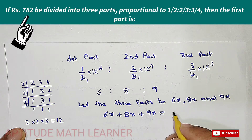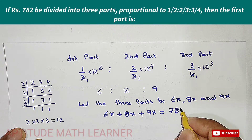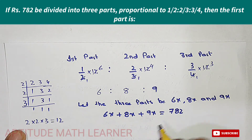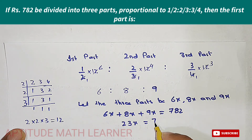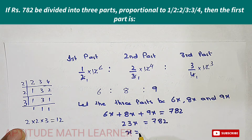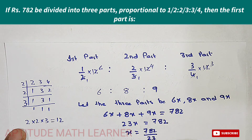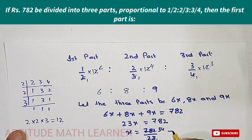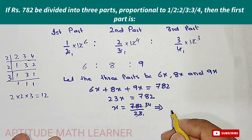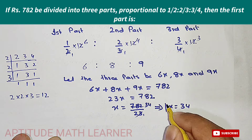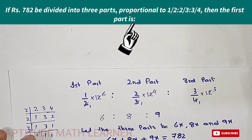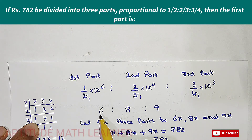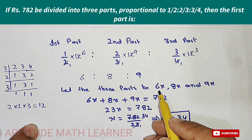So 6x + 8x + 9x = 782. This gives us 23x = 782. Dividing both sides by 23, we get x = 34. So the value of x is 34.